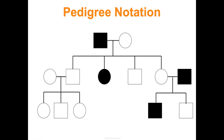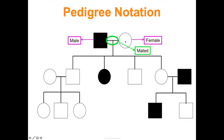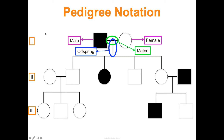Some important notation: squares represent males, circles represent females. A horizontal line means they have mated and produced offspring; offspring are connected by a vertical line. Generations are numbered with Roman numerals — generation I, II, III, and so on. For example, a male and female connected by a horizontal line might have four children: two boys and two girls, with some of those children married and having their own kids.